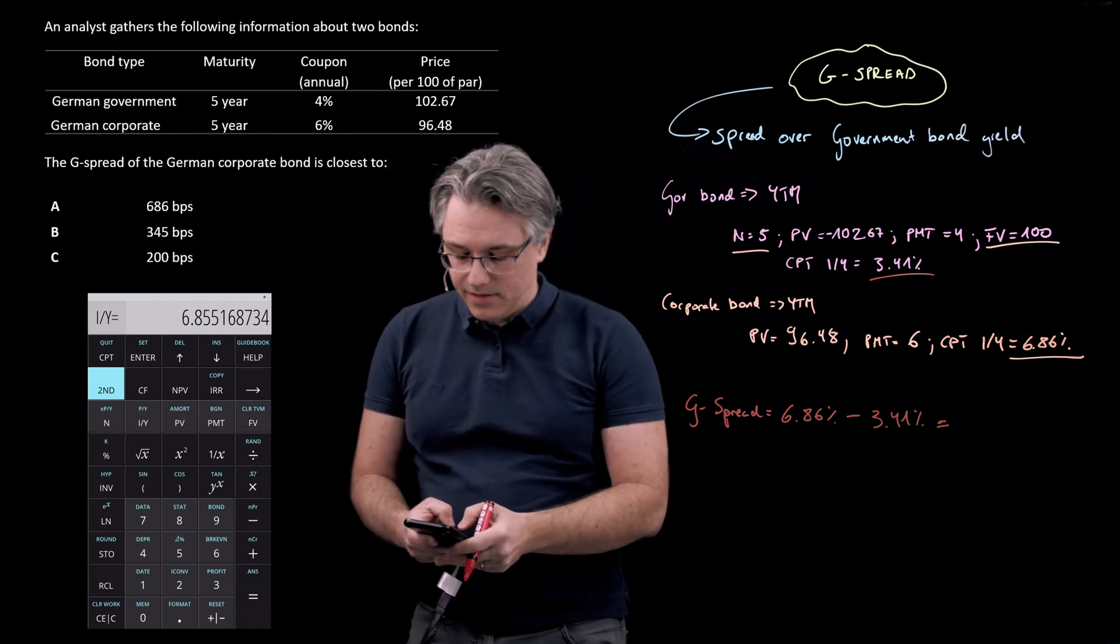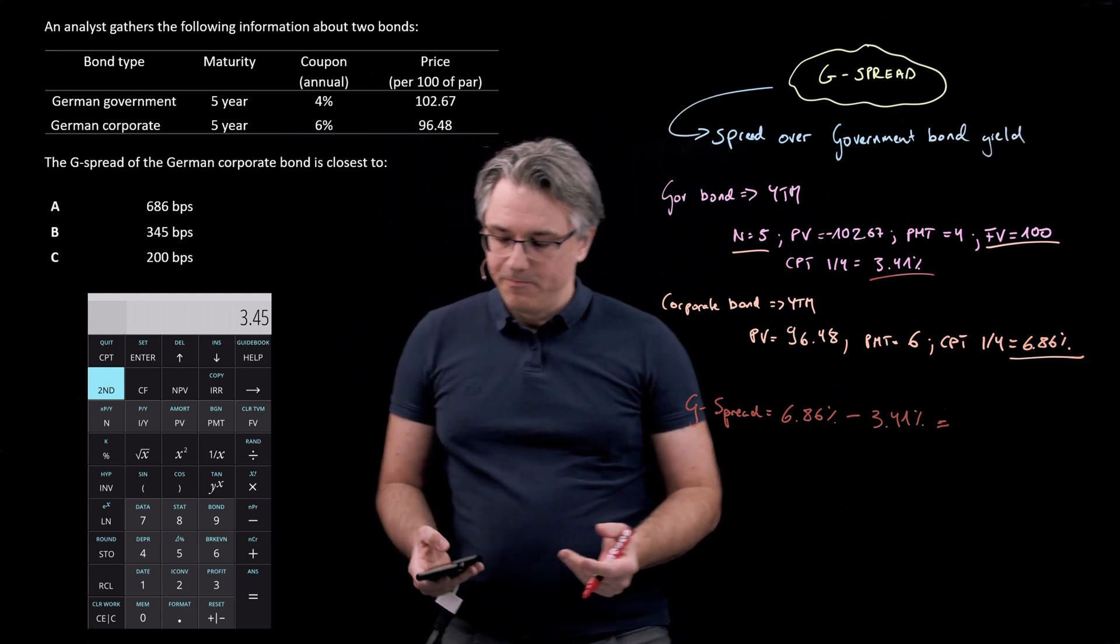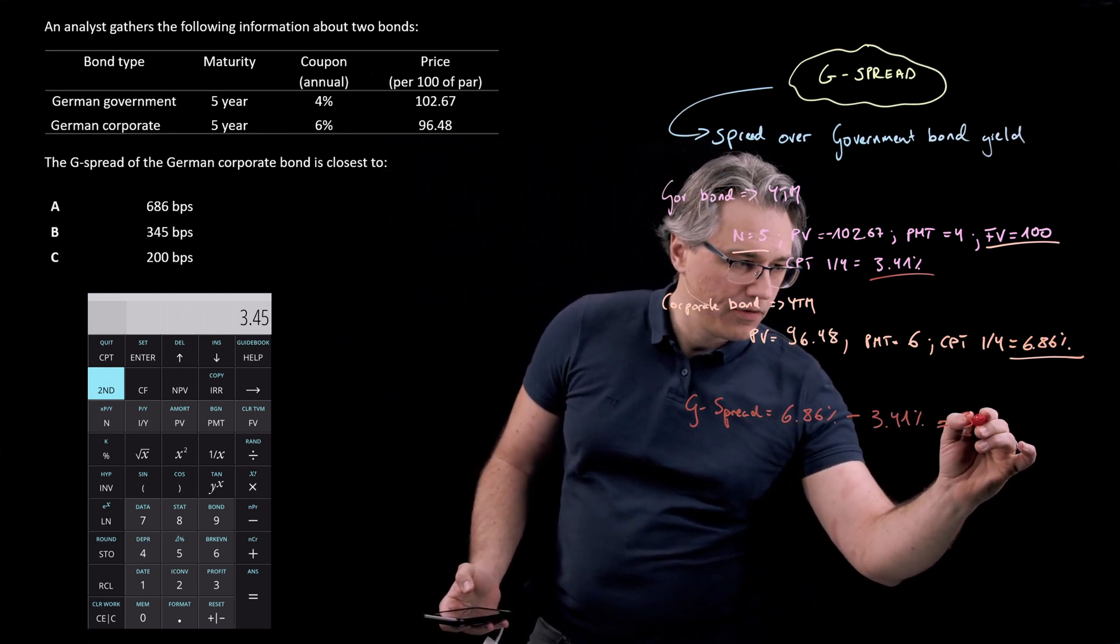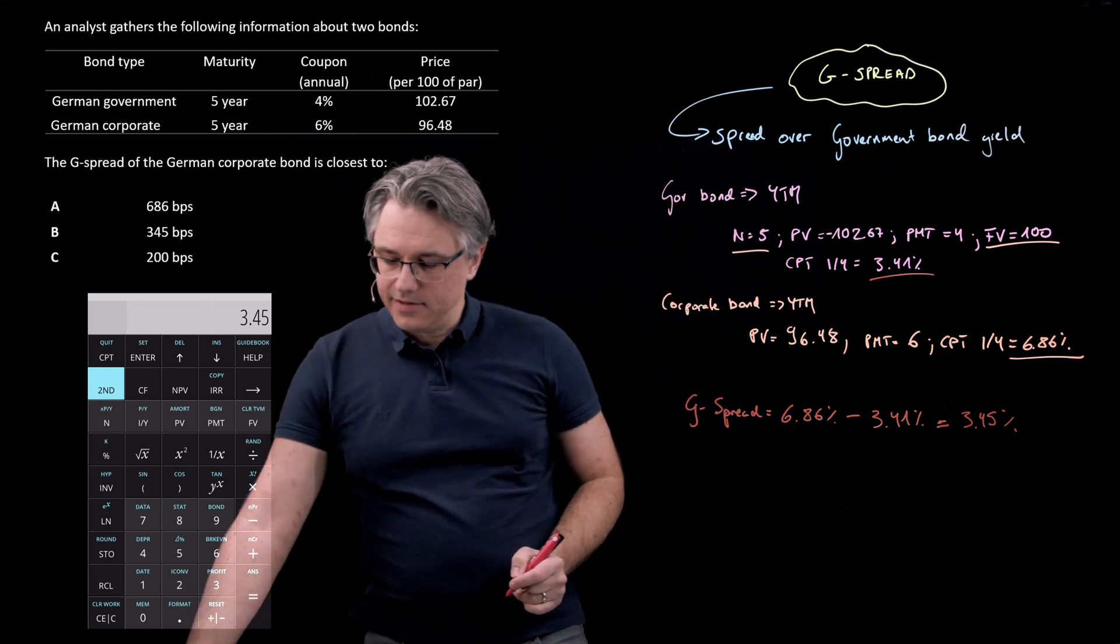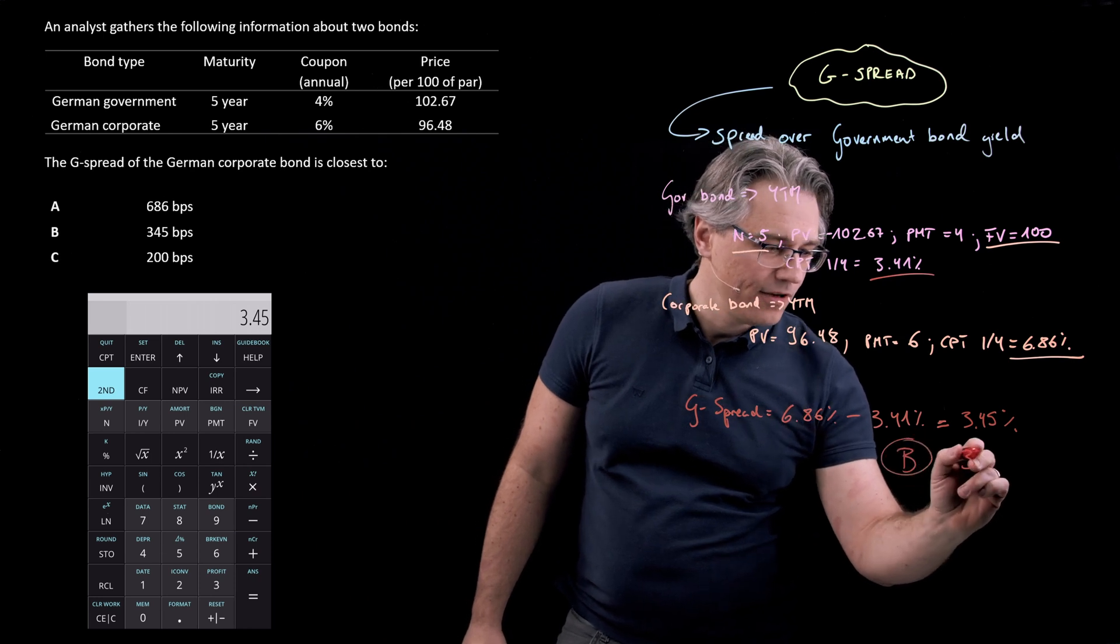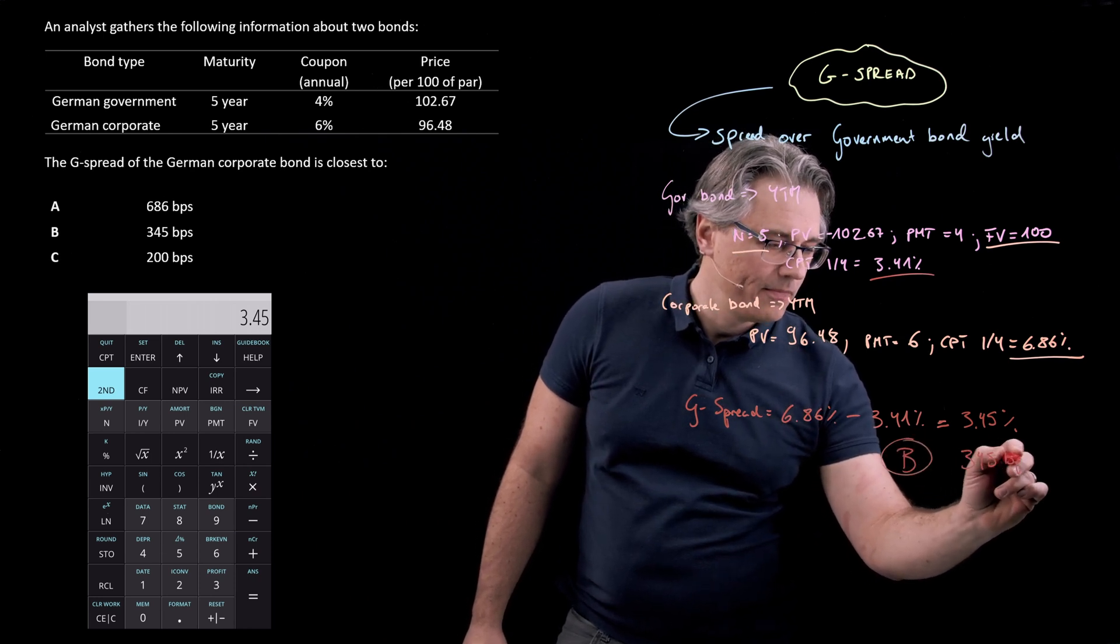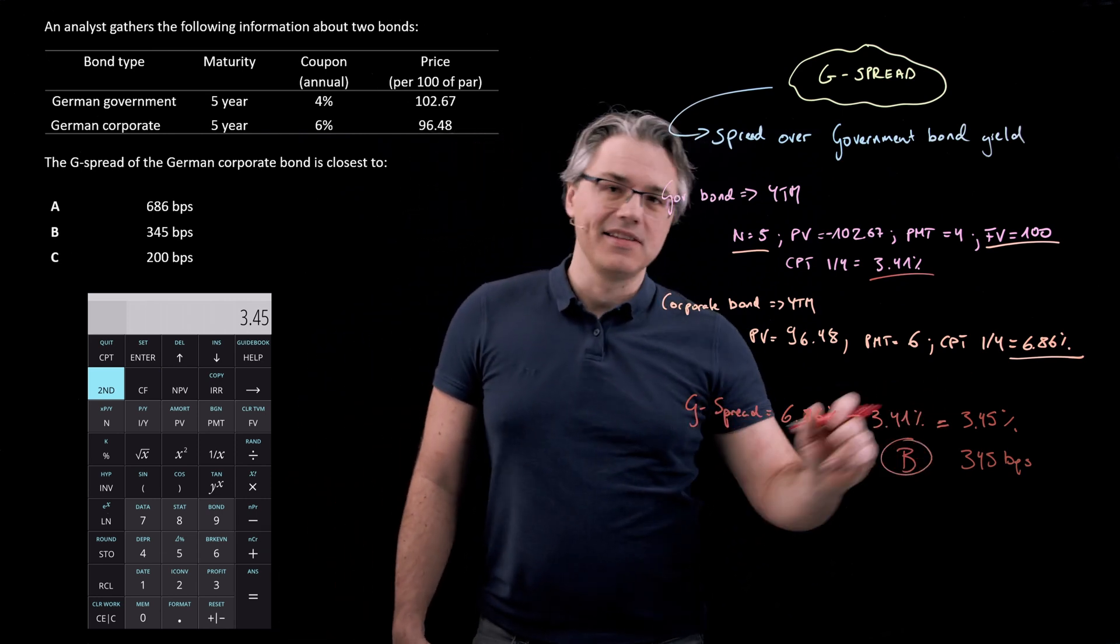6.86 minus 3.41. That gives 3.45%. And I guess this is very much in line with answer B, which says 345 basis points. A basis point is 1/100 of a percent so this is the same.